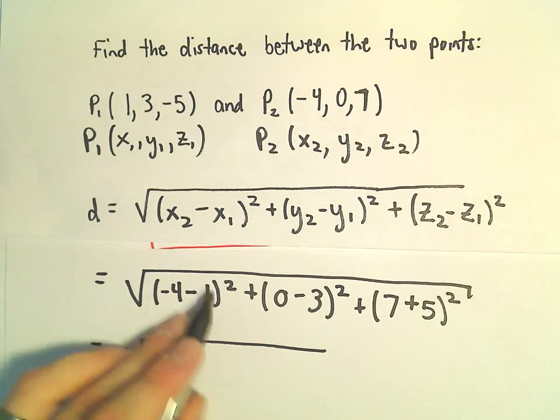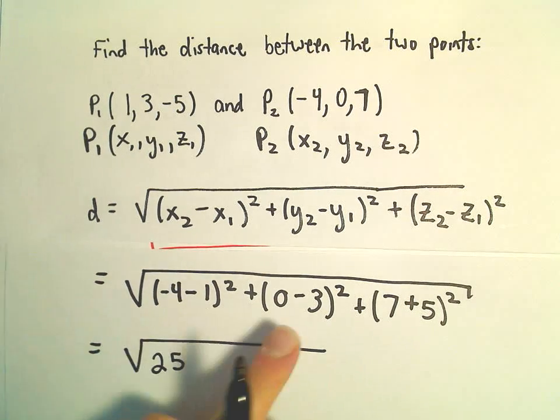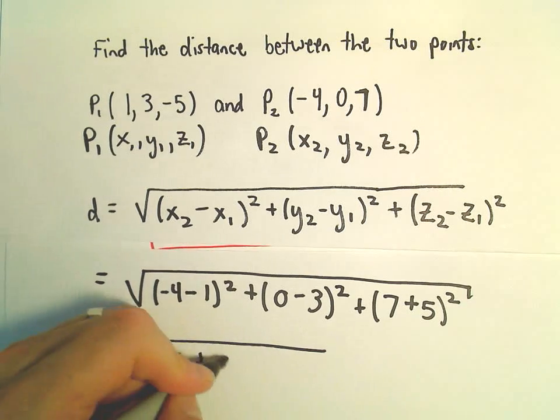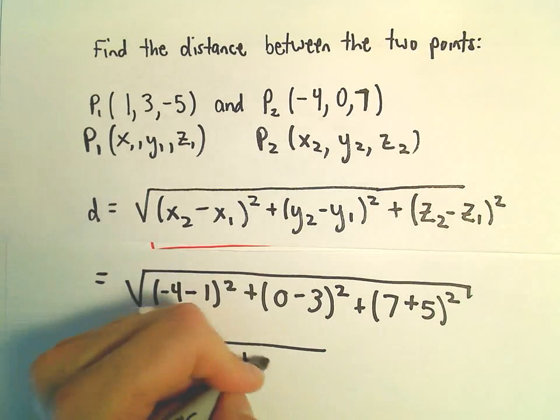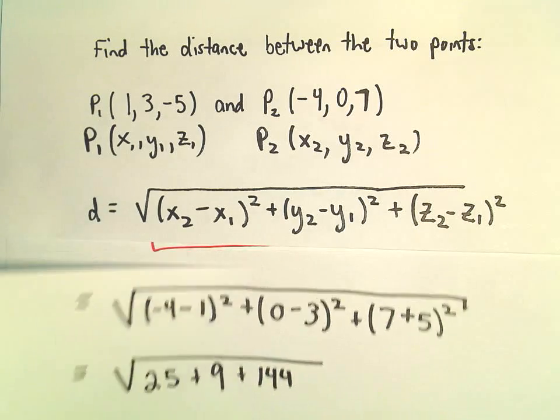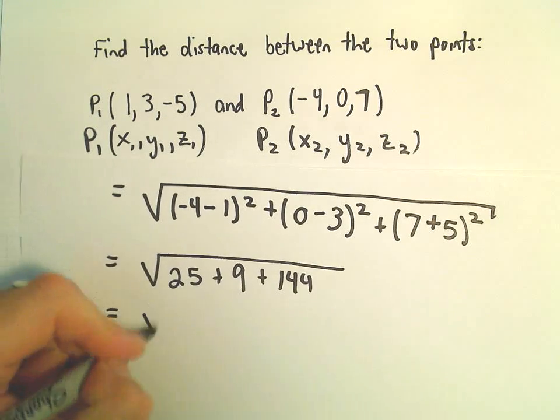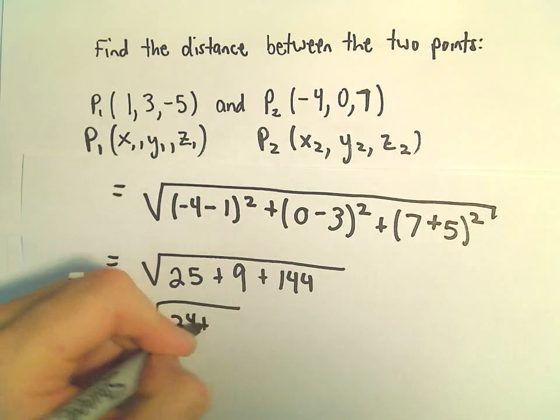So this is going to be negative 5 squared, which is 25. Negative 3 squared is going to be positive 9. And then we'll have 12 squared, which is going to be 144. If we add these together, we get 34 and 144, and that's going to give us the square root of 178.